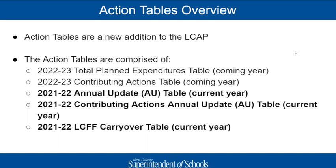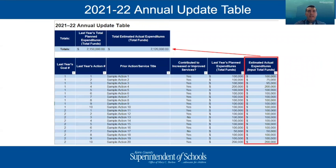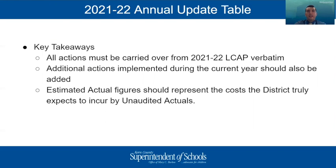Today I'm going to introduce you to the tables looking at the current year data, spending the most time reviewing the LCFF carryover table. The annual update table's purpose is to assign estimated actual expenditure amounts to your LCAP actions. All actions from your board-approved LCAP should be included, and any new actions added mid-year should also be added, including any actions related to the 15% concentration grant add-on if that applies to your district. The key takeaway: make sure all LCAP actions are accounted for, and that estimated actual amounts represent the cost your district truly expects to incur by the closing of the books — this is critical because it impacts your carryover calculation.